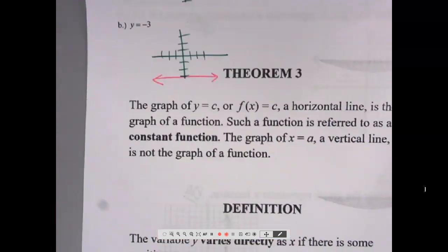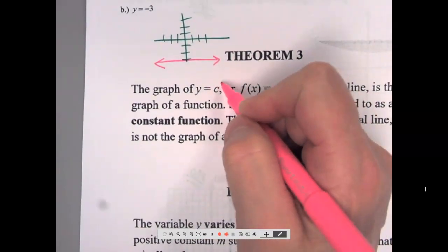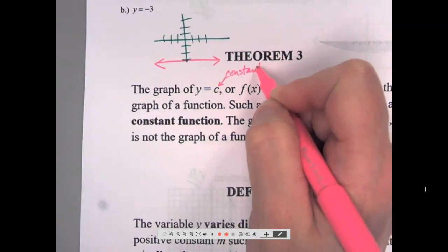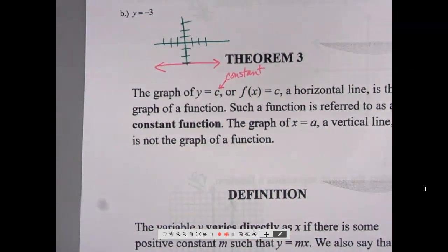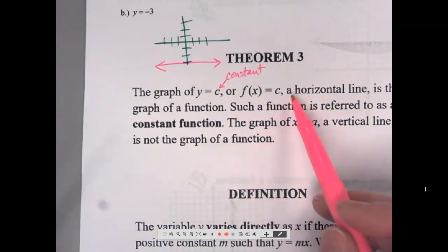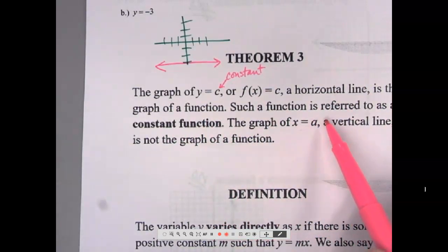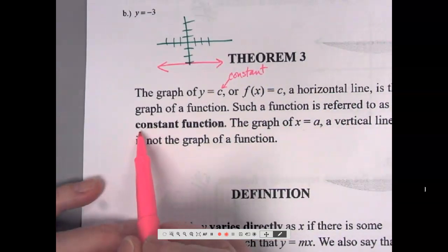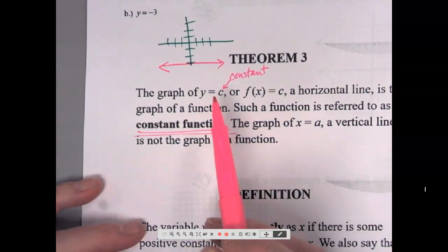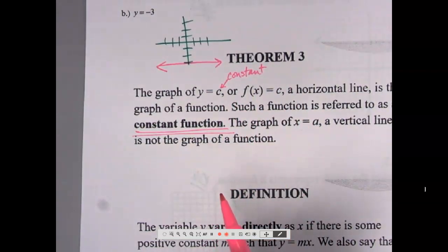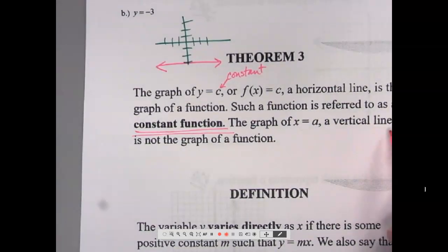To summarize: the graph of y equals c — where c is a constant — is a horizontal line. It is a function, and it's referred to as a constant function because the equation equals a plain number. The graph of x equals a is a vertical line, and it is not the graph of a function.